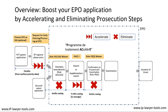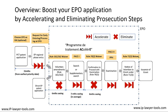Then comes the examination stage. We can save time by filing a PACE 2 request or a PPH request — Patent Prosecution Highway — again marked with the acceleration symbol. You can also file a Rule 71 paragraph 3 waiver for the notice of intention to grant under Rule 71 paragraph 3, also marked with an acceleration symbol. By these two measures combined, you can save on average 23.3 months — that is a lot of time.